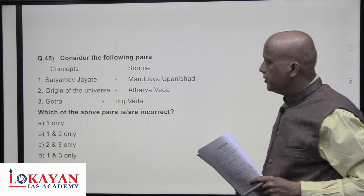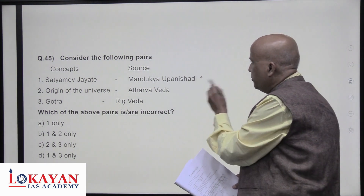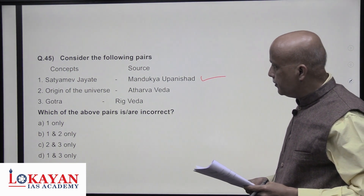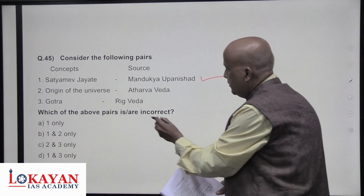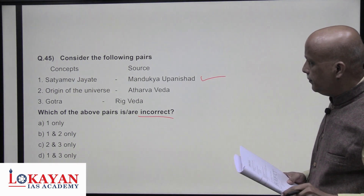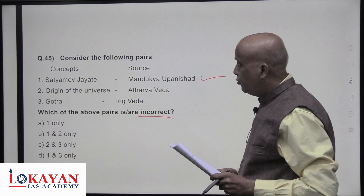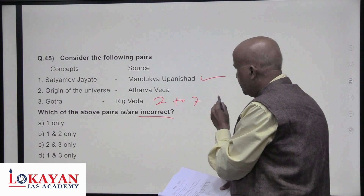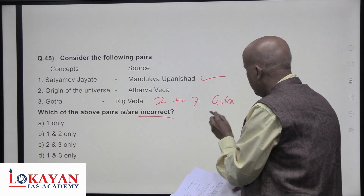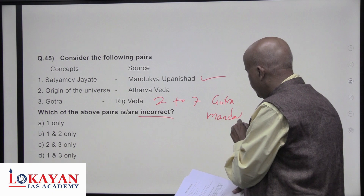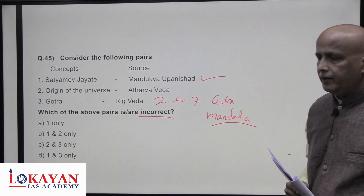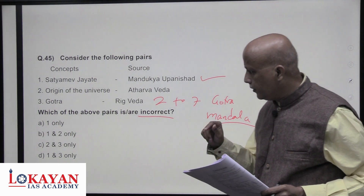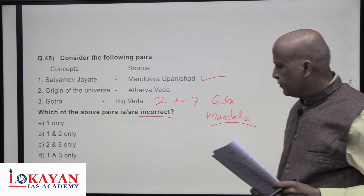Consider the following pairs of concepts and sources. 'Satyameva Jayate' is from the Mundaka Upanishad — correct. Origin of the universe — this concept is in the Rigveda itself. Gotra is also in the Rigveda — the two-to-seven mandalas are basically gotra mandalas. Statements one and three are correct, but two is incorrect.